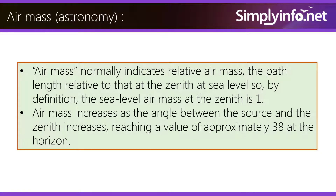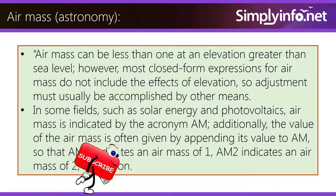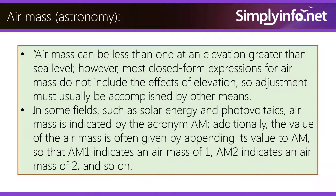Air mass normally indicates relative air mass — the path length relative to that at the zenith at sea level. By definition, the sea level air mass at the zenith is one. Air mass increases as the angle between the source and the zenith increases, reaching a value of approximately 38 at the horizon. Air mass can be less than one at elevations greater than sea level.